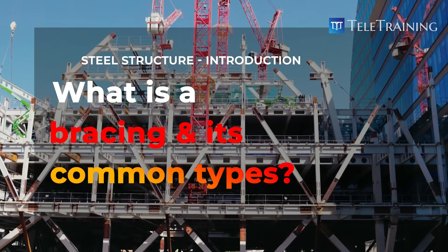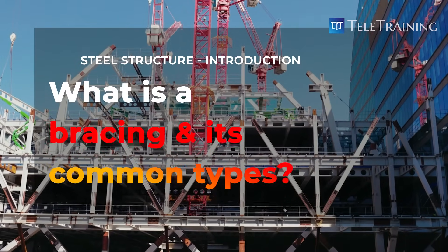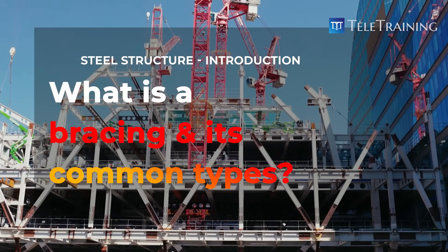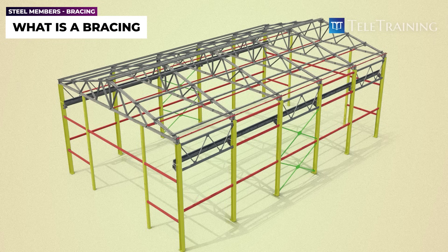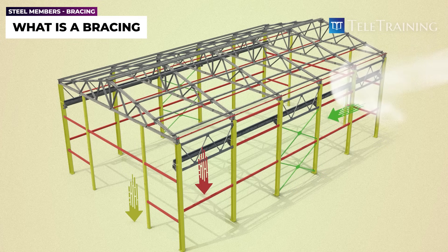What is bracing and its common types? Bracing is installed in structures in order to provide stability and resistance against lateral loads. While beams and columns support vertical or gravity loads, bracing is installed to resist horizontal loads, such as wind, that act on a structure.